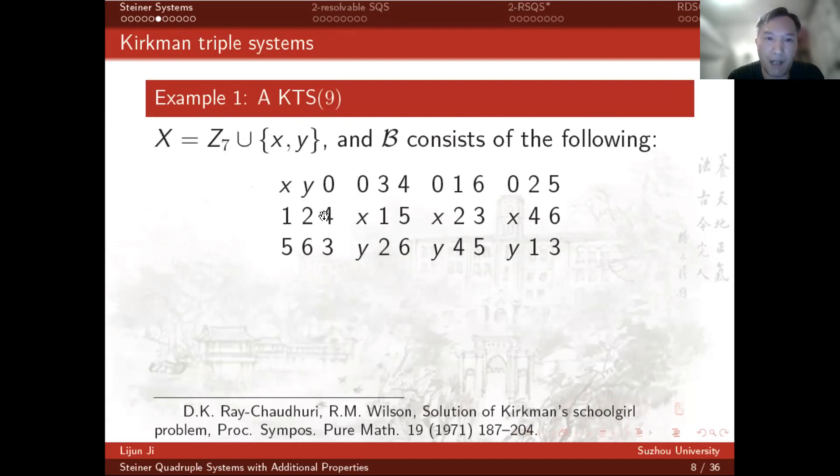The block set consists of the following. There are four parallel classes: this is a parallel class, this is also a parallel class, and so on.